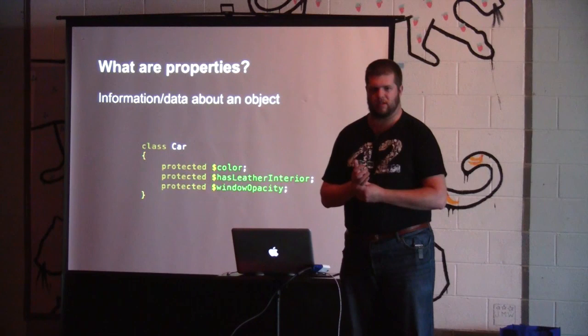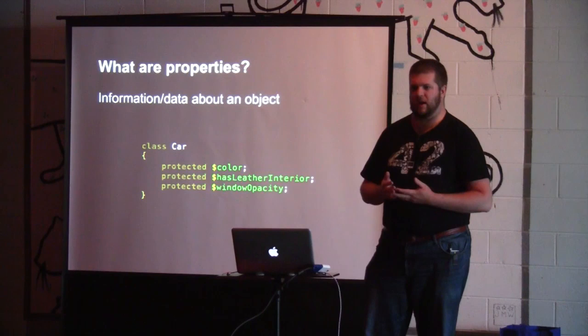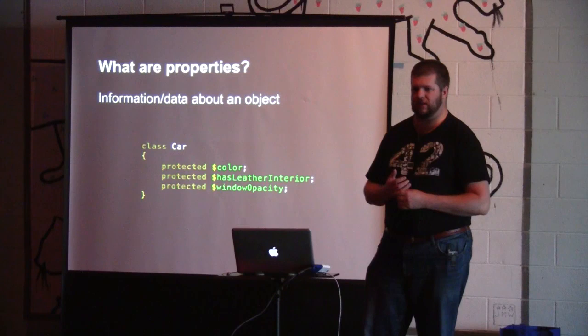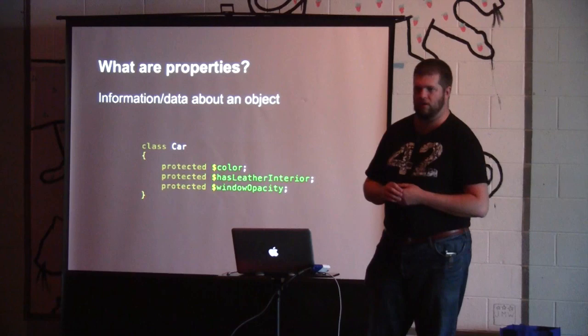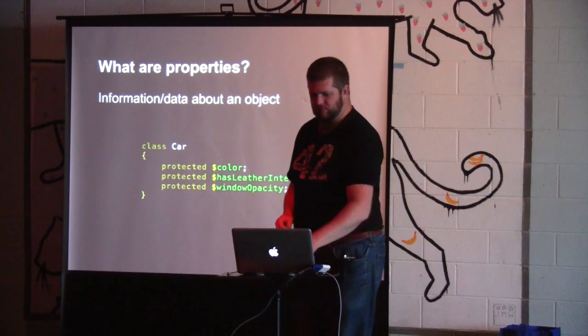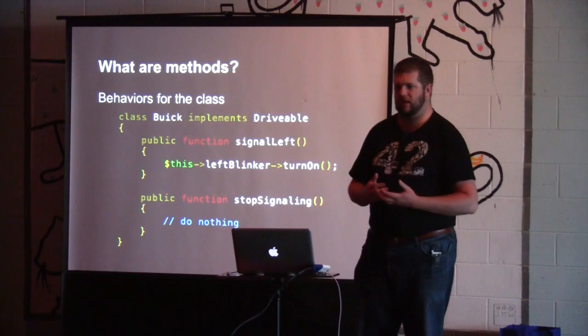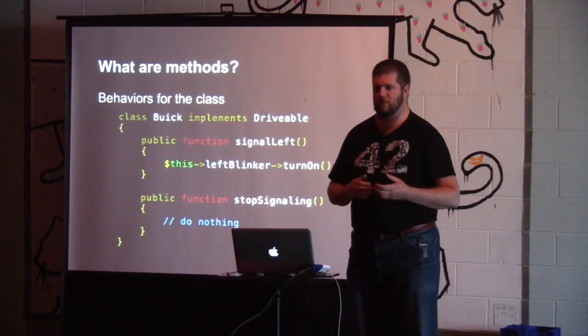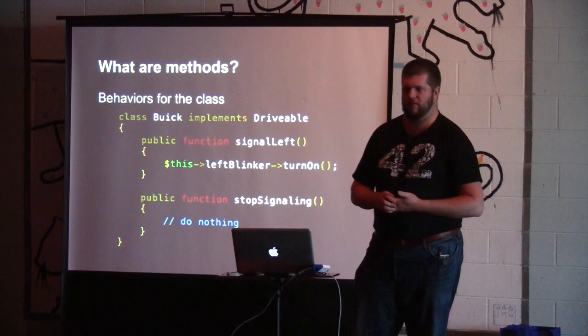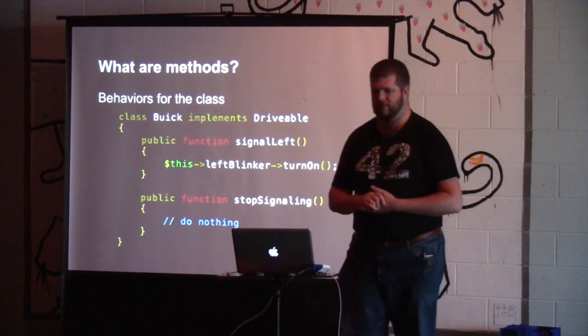The next concept is properties. Properties are just data about an object — they're state. Things like color, position, or speed could all be stored as properties on an object. In this case, we've got a car with a color property, a boolean for whether it has leather interior, and a window tint amount. Then there are methods, which are the behaviors on the class — things that we can do to change the state of the class or get information from it. We've got a Buick that has a signal it can't turn off.